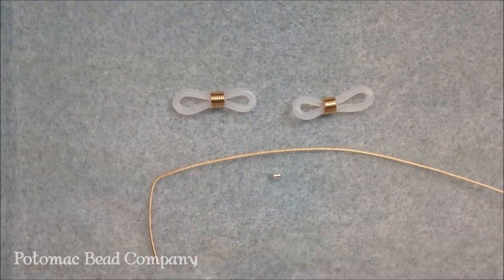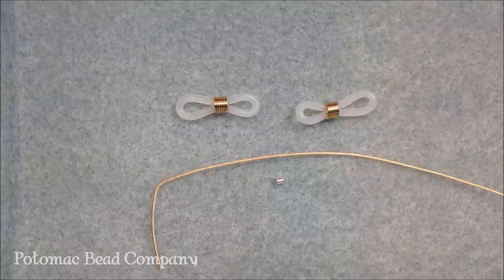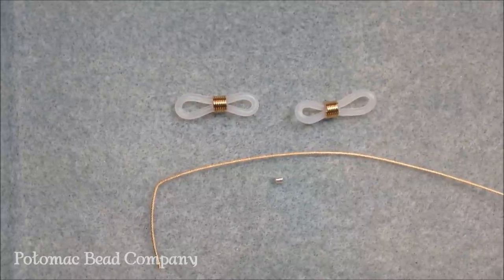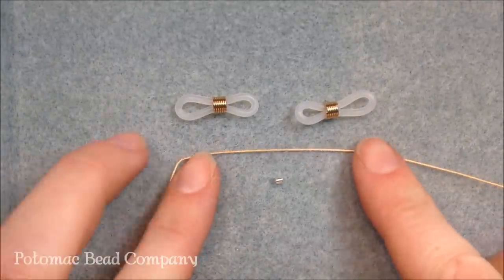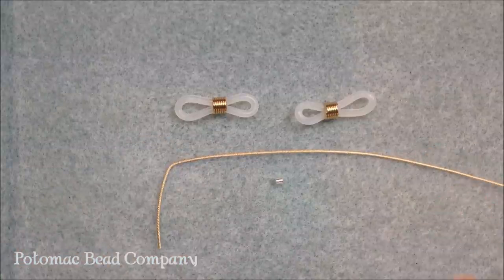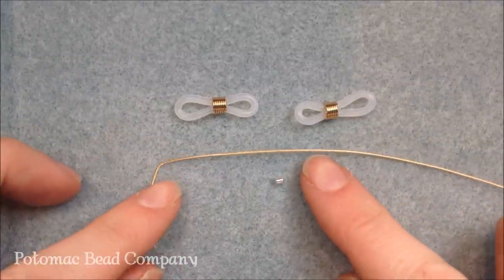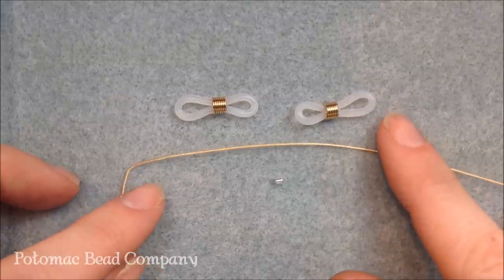For this, it's going to be just like attaching to a regular necklace. We have another video that you can check out how to do that. But what you're going to be using is a thicker cable wire. So this wire here is 49 strand, 0.024 bead-alon wire.